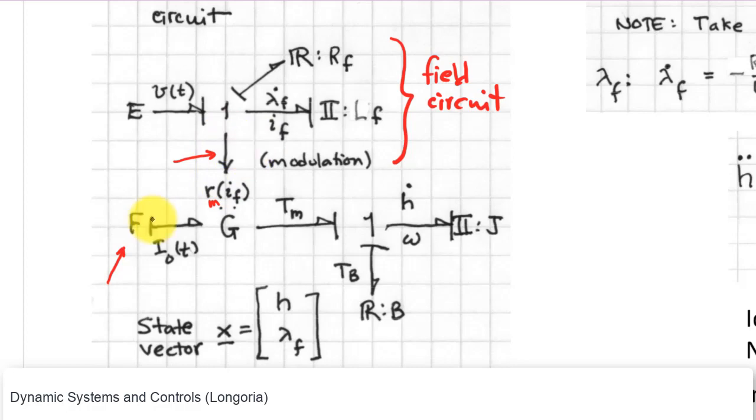So note, now I have flow in, torque out. That gives me that causality, so I have one state there. On the field circuit, I have voltage in. Remember, no causality on this guy, but now I have integral causality here, so I have another state. So I have two states - lambda F and H, second order system.